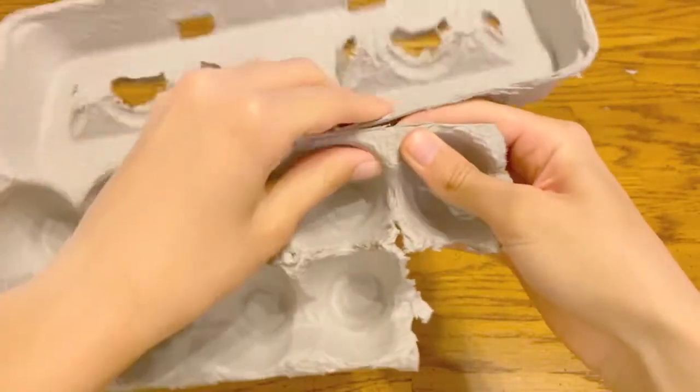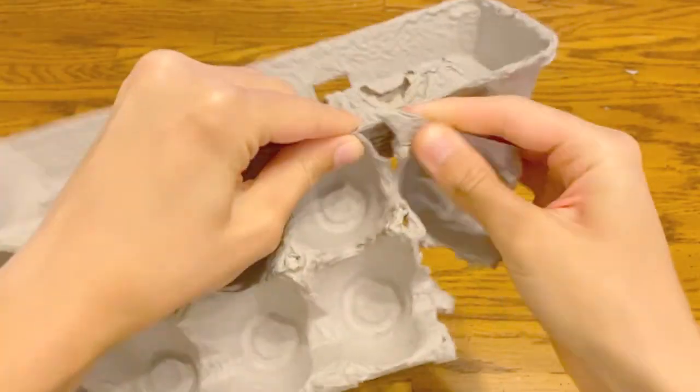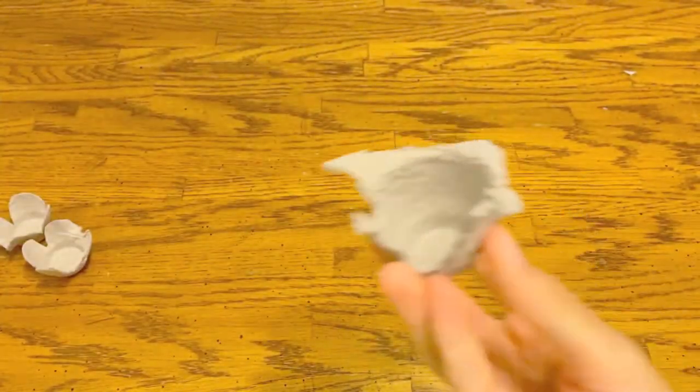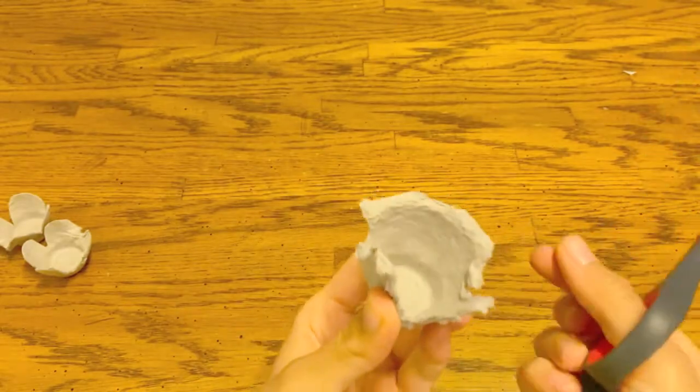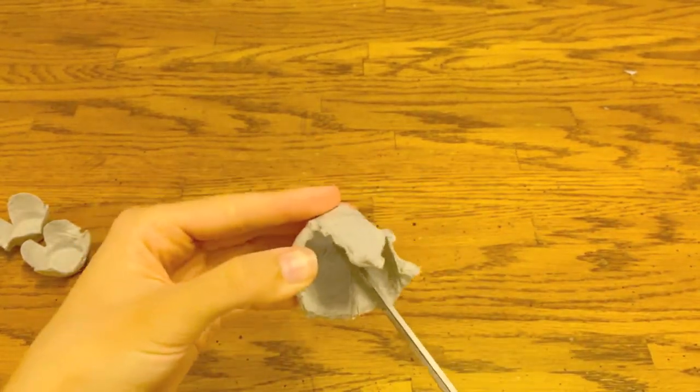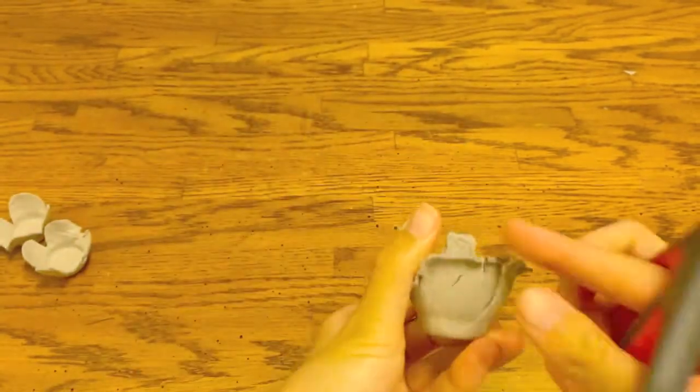To do this, take off one section of the carton, so where one egg used to be. We want four petals. I see two here already, so let's split this section to be two more petals by carefully cutting a little v-shape.